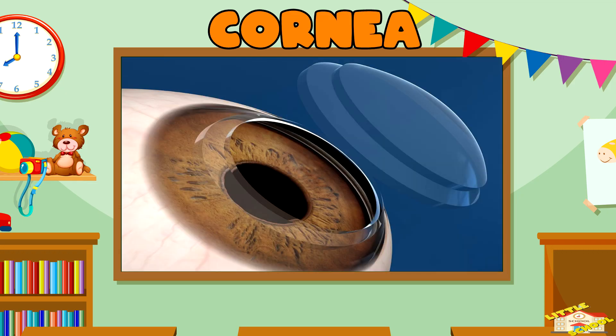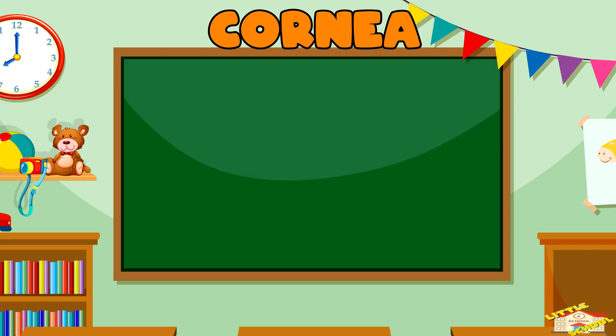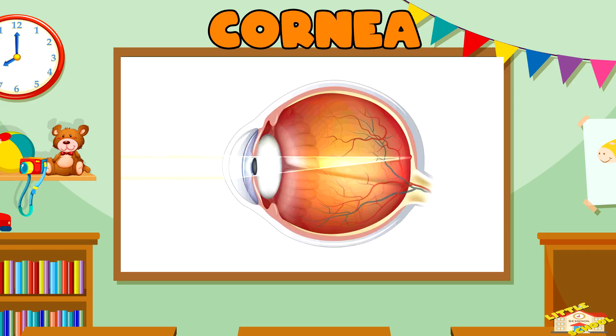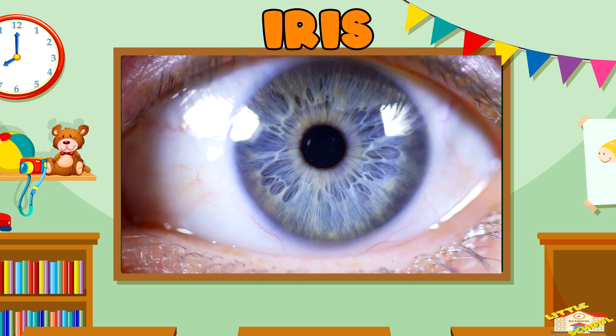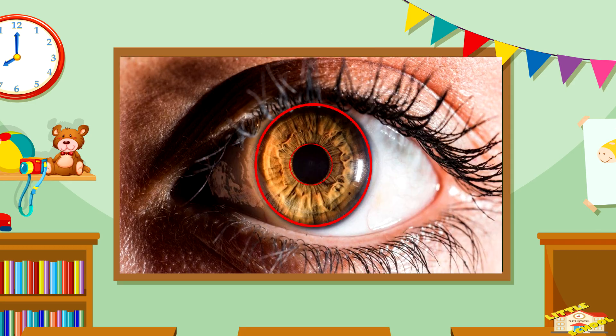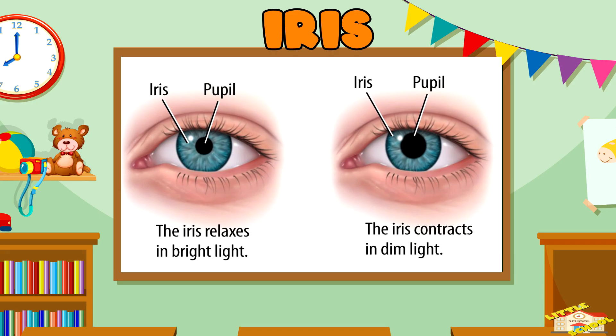Cornea: The cornea is the transparent, dome-shaped front part of the eye that covers the iris and pupil. It helps to focus light as it enters the eye. Iris: The iris is the colored part of the eye. It controls the size of the pupil, thus regulating the amount of light that enters the eye.